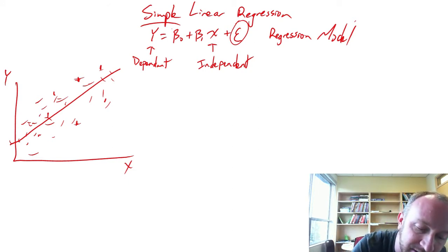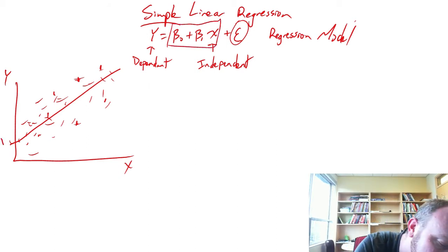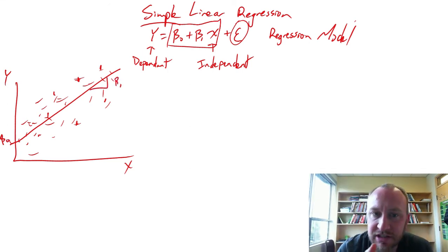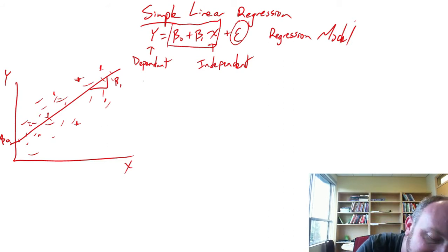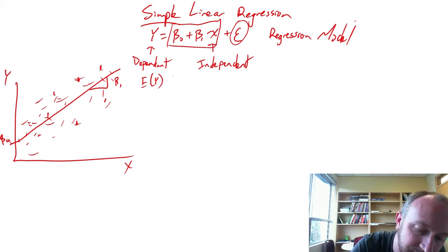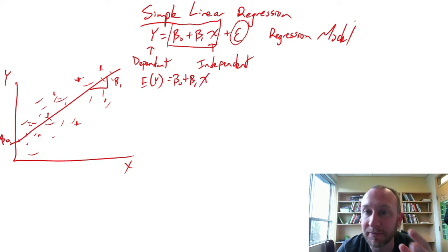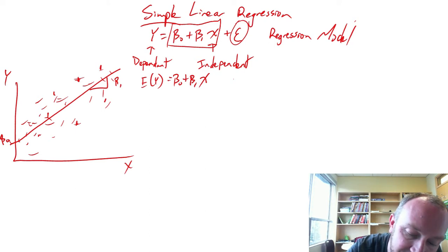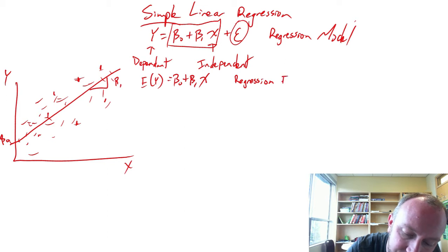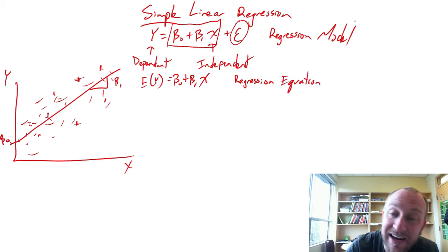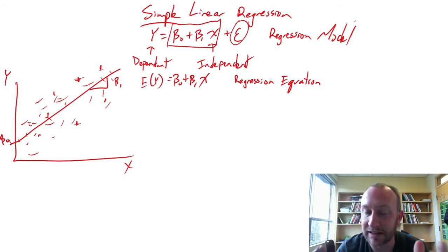This equation describes the y-intercept and the slope of the average relationship between x and y. If we take the expected value of our regression model — so that we look at the average relationship — the error term epsilon disappears. This is what we call our regression equation, and it states that on average, it's a perfect linear relationship.